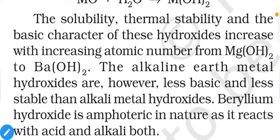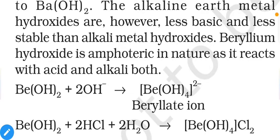Beryllium hydroxide is amphoteric in nature as it reacts with both acid and alkali. The basicity of metal oxides and hydroxides depends on the strength of the metal. Strong metals like alkali metals give strong basic nature; weaker metals give weak bases. With OH⁻ ions, Be(OH)₂ gives a beryllate complex compound, and with acid it gives a Be(OH)₄Cl₂ type complex compound — in both cases complex compounds are formed.